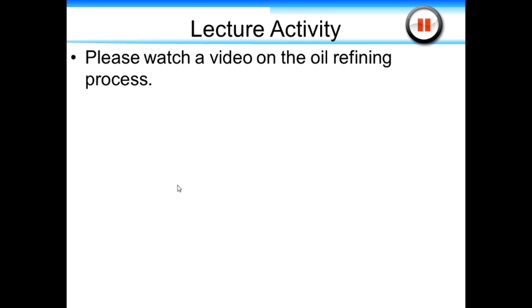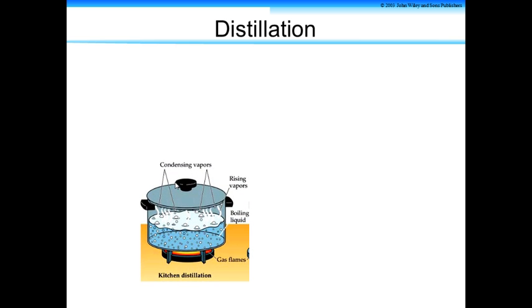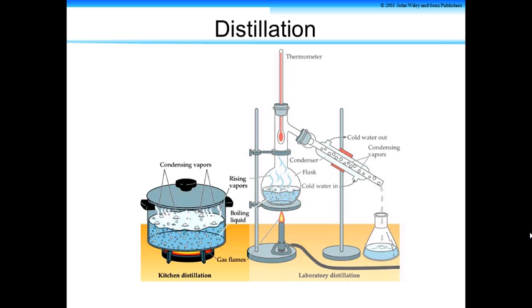Let's watch an overview on the oil refining process. Now let's take a look at distillation. Whenever you heat something up, you are distilling it in a sense, but you're trapping the vapors in your pot usually, or just not collecting them if the vapors evaporate. It's not too different in the laboratory setting, where you heat a container and it begins to evaporate. If we actually want to distill and collect the vapors, usually we have some type of cooling jacket.